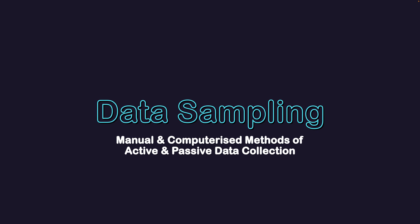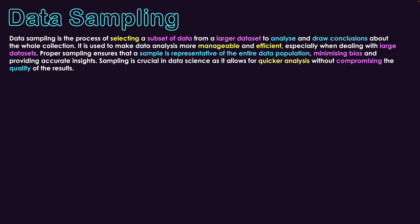Data sampling — manual and computerized methods of active and passive data collection. Data sampling is the process of selecting a subset of data from a larger data set to analyze and draw conclusions about the whole collection. We're taking a small, calculated portion from a larger data set and doing our analysis to build insights and find trends. It is used to make data analysis more manageable and efficient, especially when dealing with larger data sets.